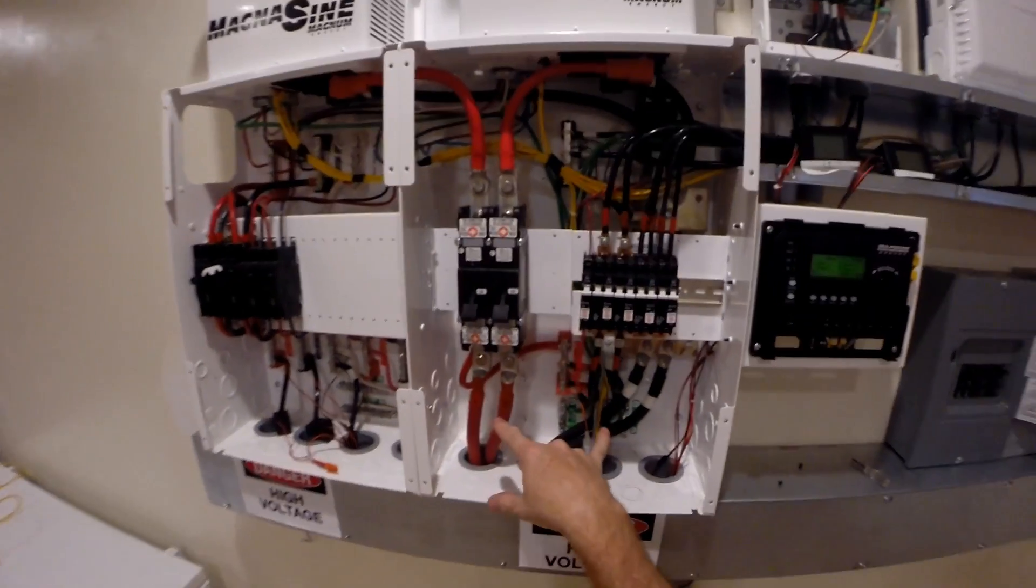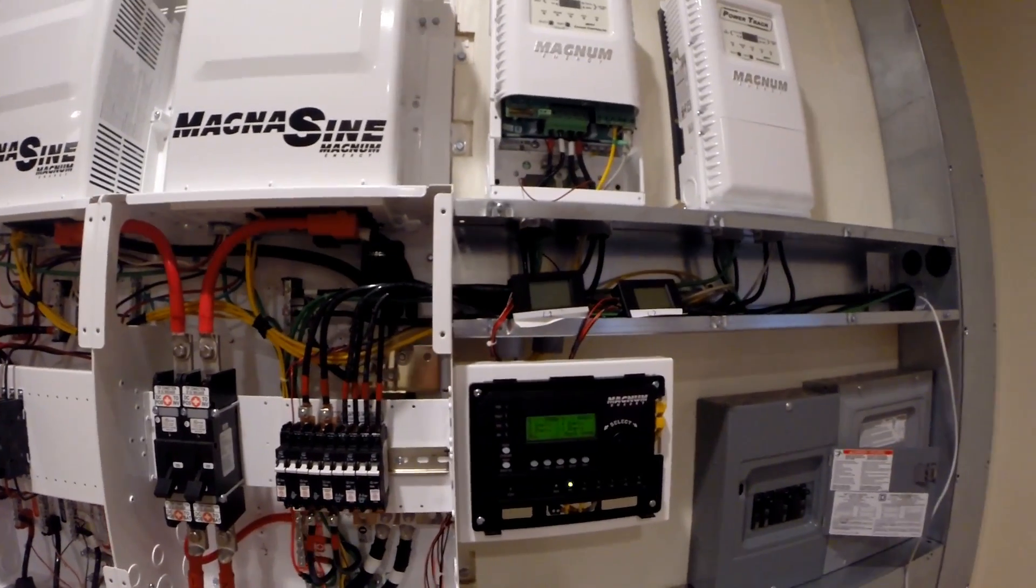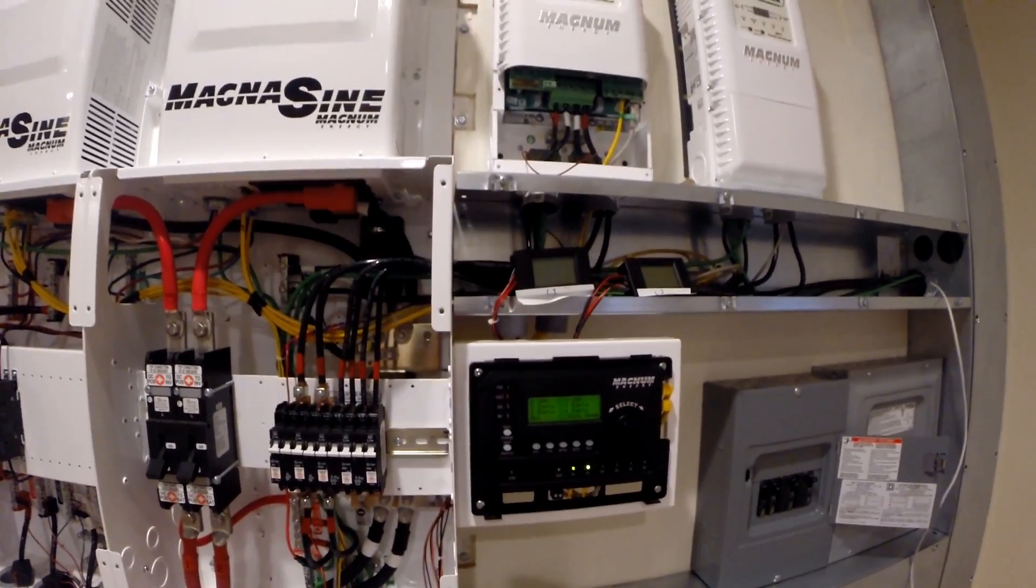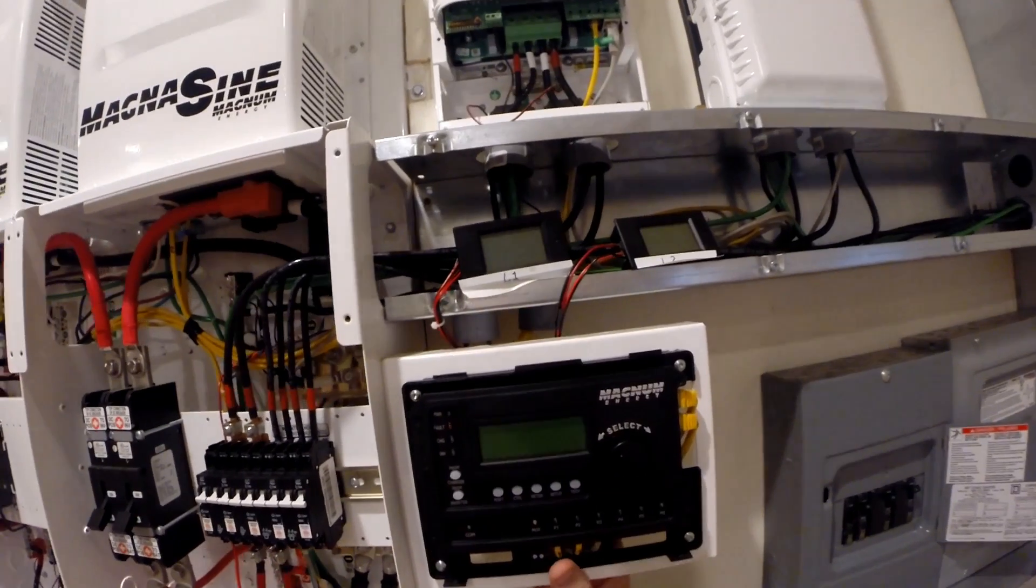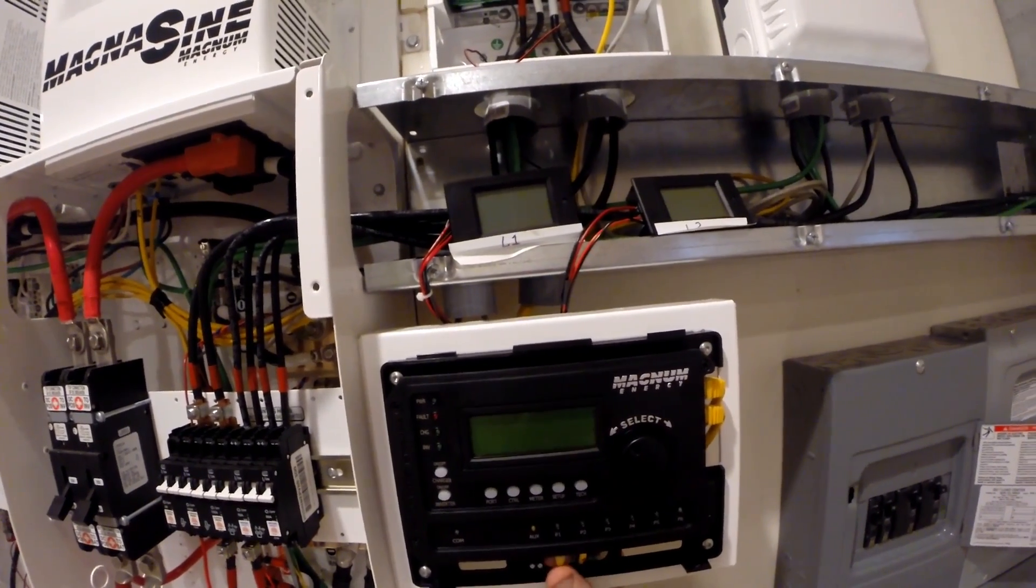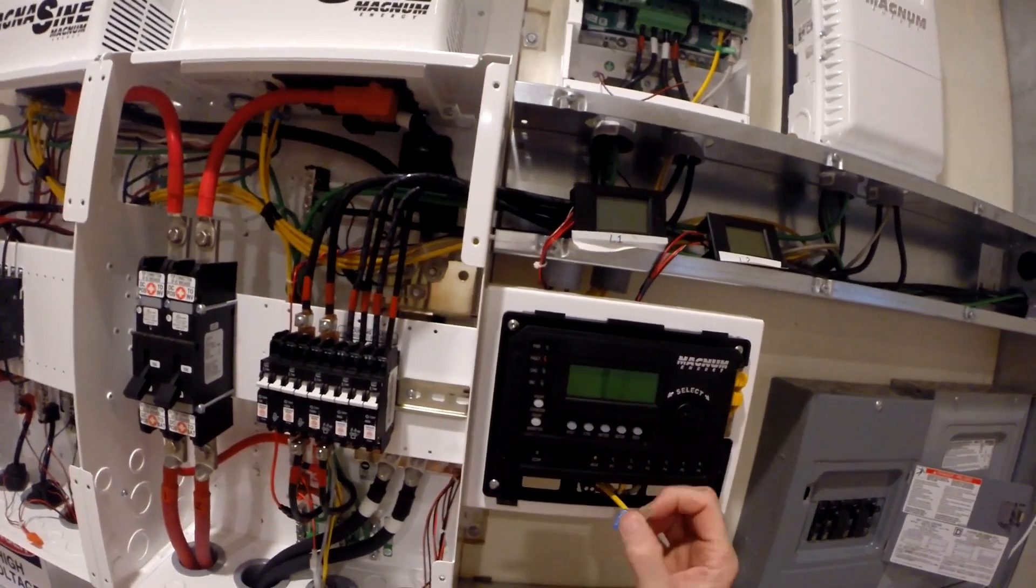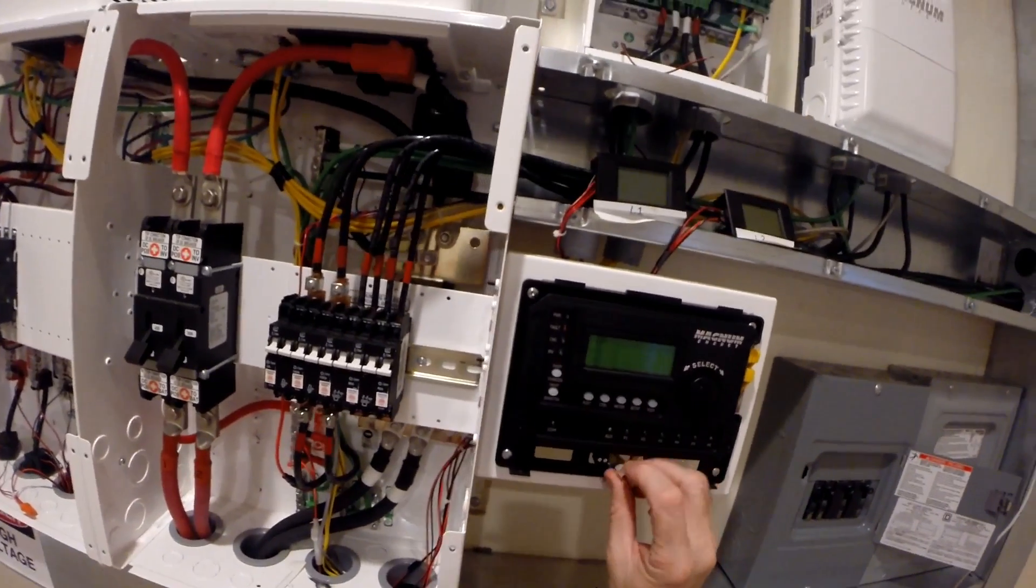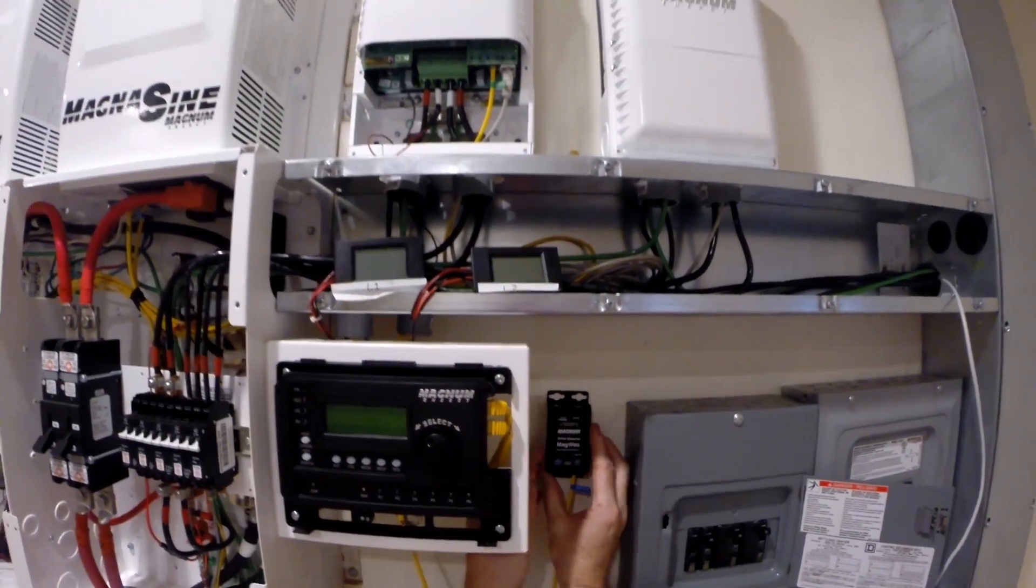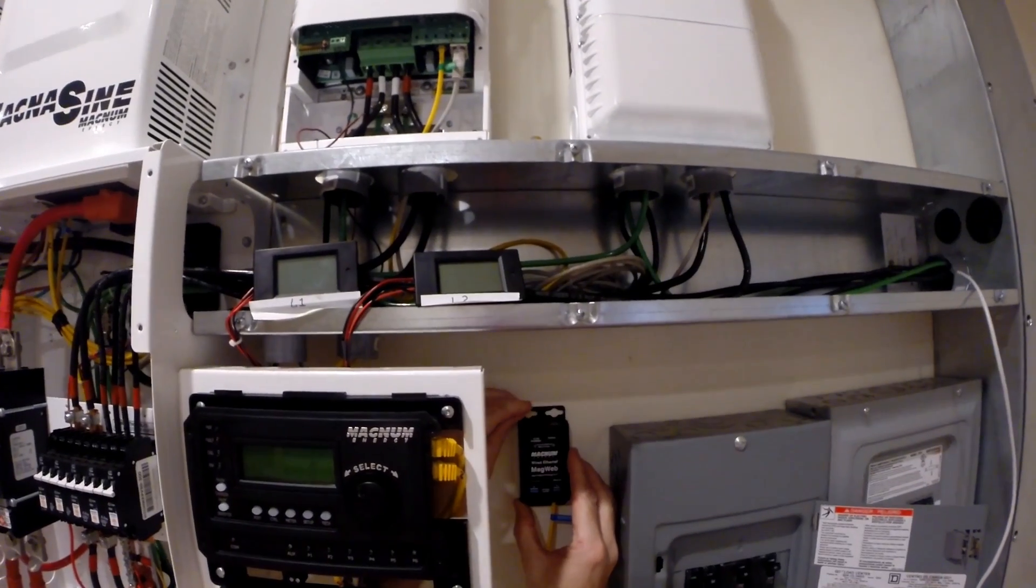I still have DC power to here and that's it. Now I can take this out of here. This is from the master inverter remote. I'm going to plug that into here. So I'm going to mount this little MagWeb like right up here.